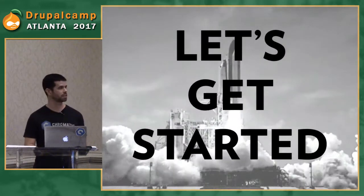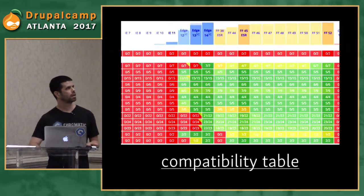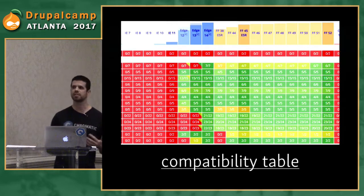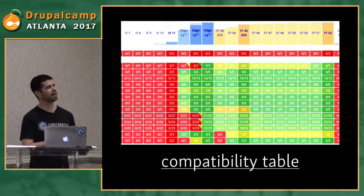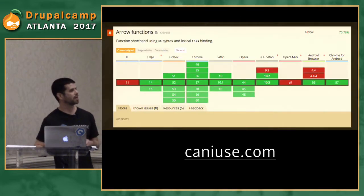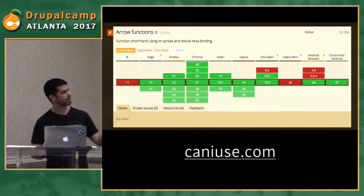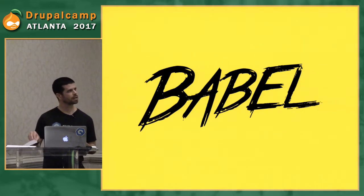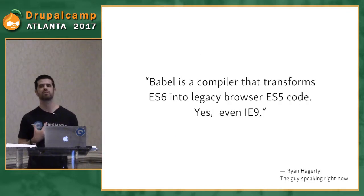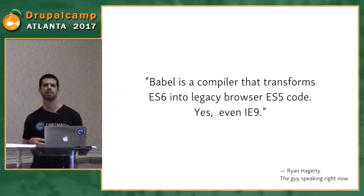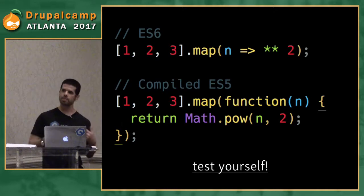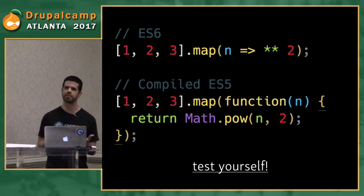Let's dive into ES6 and how we can start working with it. This is a compatibility table from Babel's website. It shows all the different ES6 features and how compatible they are with certain browsers. You can look at IE11 and think, 'I live in the real world, I've got to work with IE11. How am I supposed to use ES6?' You can also go to caniuse.com to look up specific functions — here's arrow functions: not supported on IE. Big surprise.